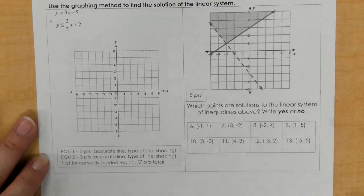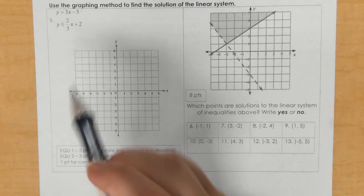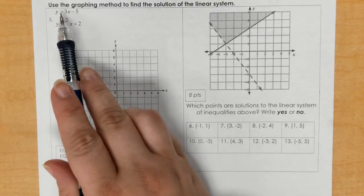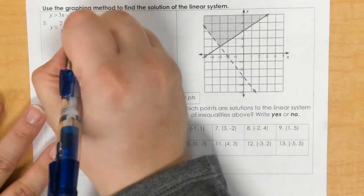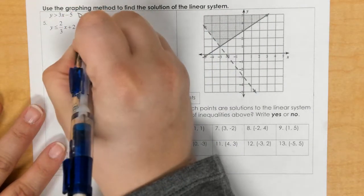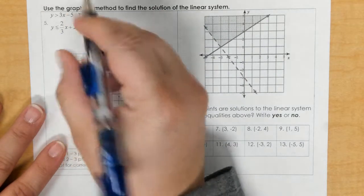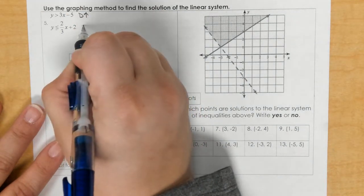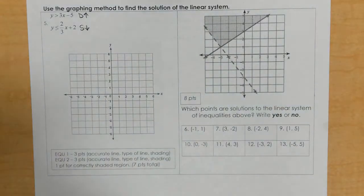For number 5, I'm going to graph the first one. I see that would be greater than, which is a dashed line. It's greater, which means you shade above. For less than or equal to, the equal to means it's a solid line. Less means you shade down.